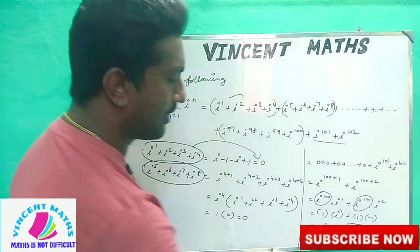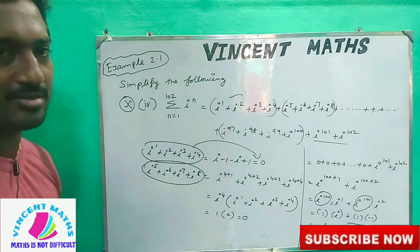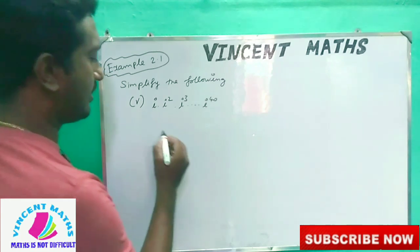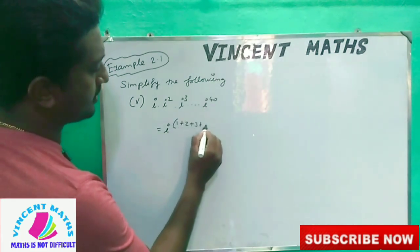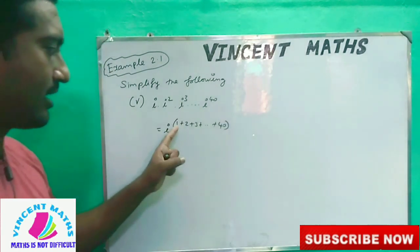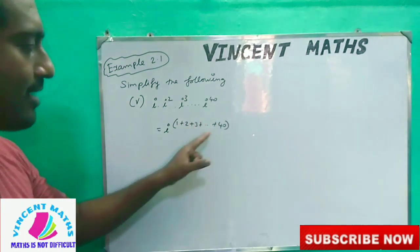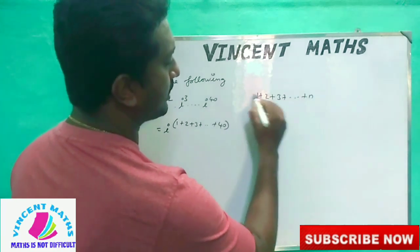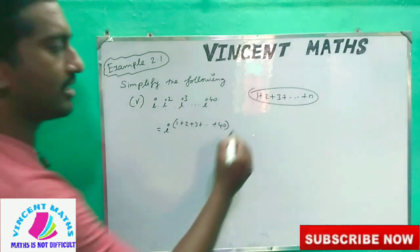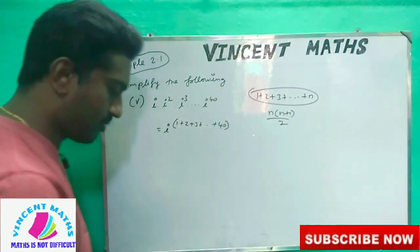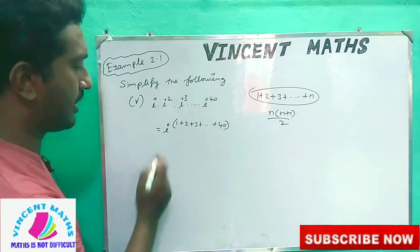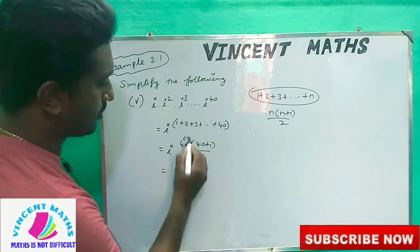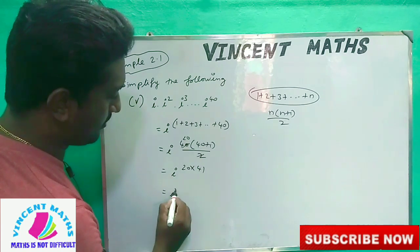So this is a good answer, friends — it is very simple. You can do two marks or three marks. Now another problem: if you add the value to the power — i power 1 plus 2 plus 3 plus up to 40. How do we do N terms? Add this formula: 1 plus 2 plus 3 plus N equals N into N plus 1 by 2. The value of N is 40. So we get i power 40 into 41 divided by 2.